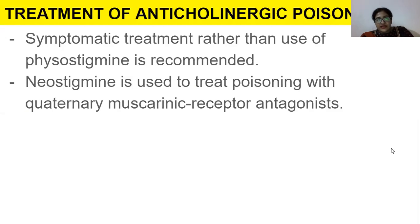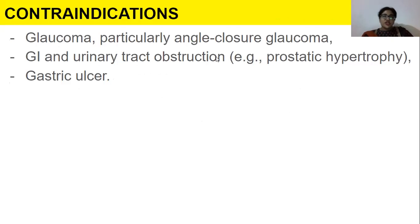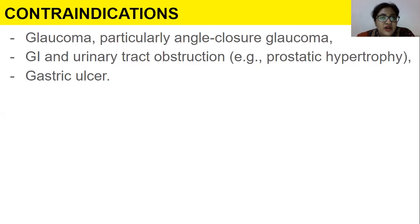For treatment of anticholinergic poisoning, symptomatic treatment is done first — if temperature is high or nausea is present, those are addressed individually. Otherwise, neostigmine is used to treat poisoning with overdose of muscarinic receptor antagonists. Contraindications: do not use anti-muscarinic drugs in patients with glaucoma — especially angle-closure glaucoma — or in patients with GIT or urinary tract obstruction, or gastric ulcer.